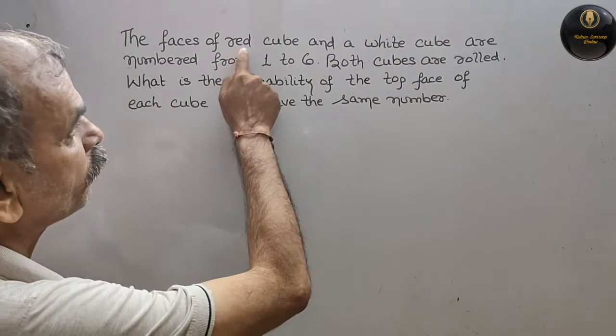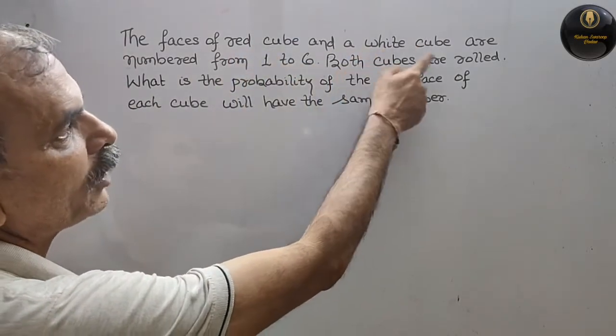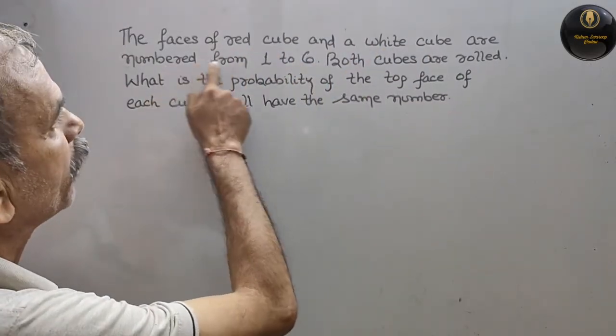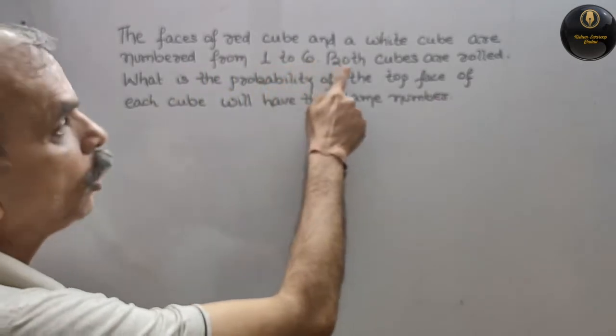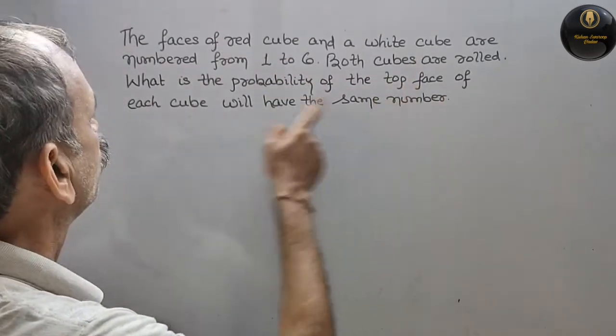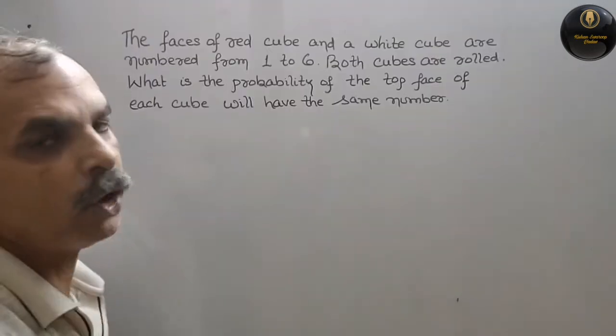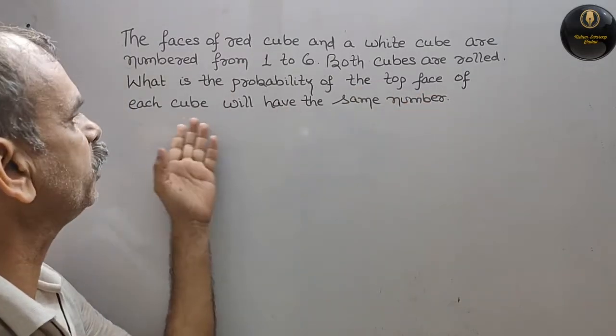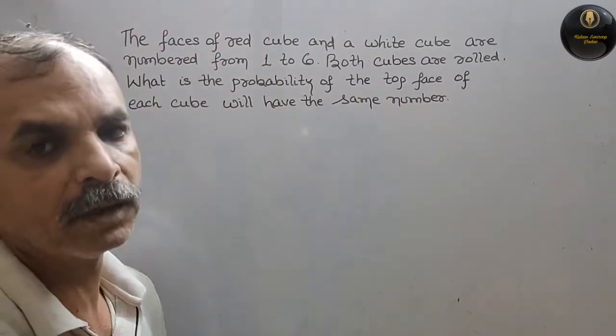The faces of a red cube and a white cube are numbered from 1 to 6. Both cubes are rolled. What is the probability that the top face of each cube will have the same number?